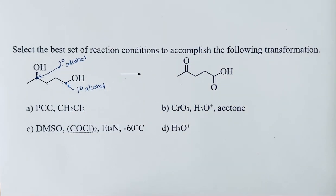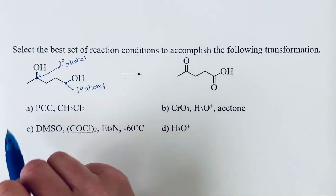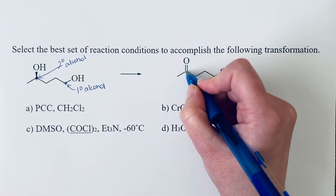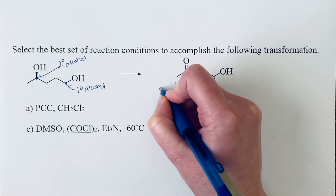We want to pay attention to what we are oxidizing these to. Secondary alcohols can only be oxidized to ketones, and that's what we see happening here. That secondary alcohol has become a ketone.